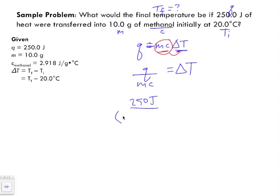So we've got mass, which is 10 grams, multiplied by my c value, which is 2.918 joules per gram degrees Celsius, equals delta T. And our delta T we've broken down to being Tf, our final temperature, subtracted by 20 degrees Celsius.